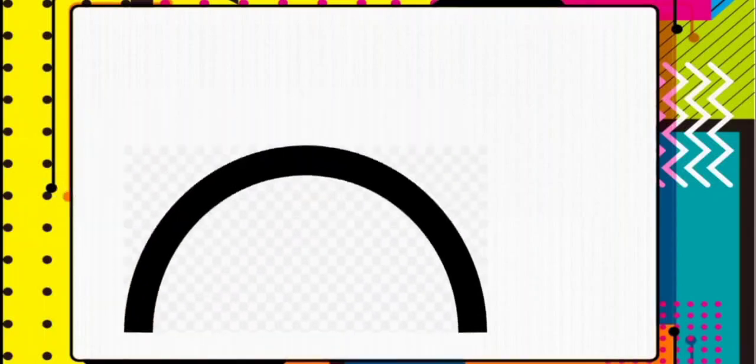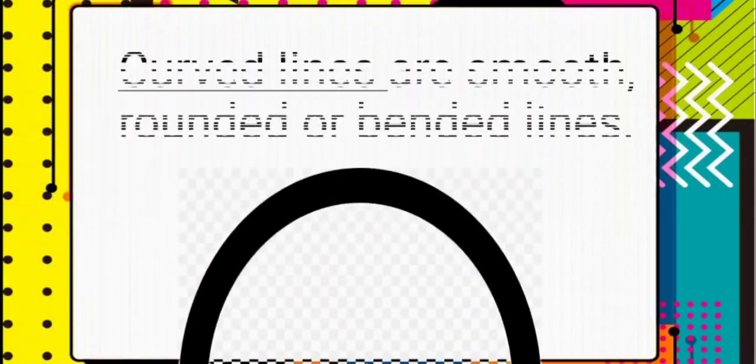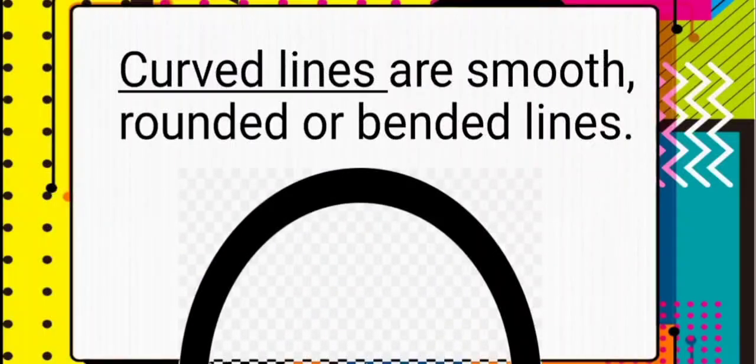Our next kind of line is the curved line. Curved lines are smooth, rounded, and bent lines. Below is our example of curved lines.